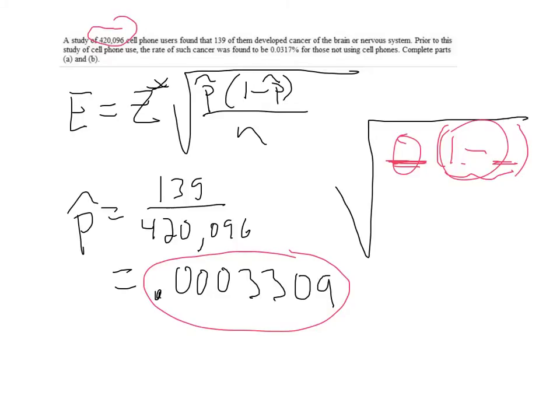And then I'm going to divide that by that sample size. And then I took the square root, and then what that gave me was a number that is very small, 0.00000281, if I do rounding. Now, that's this part of this formula.